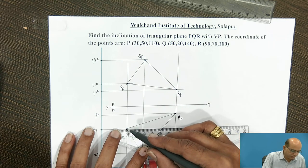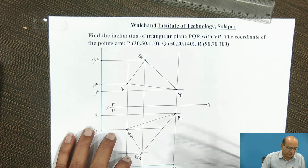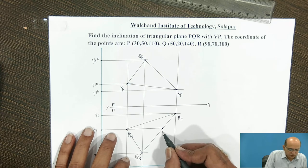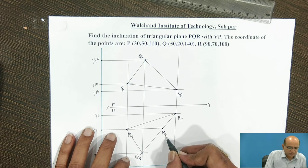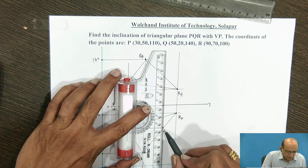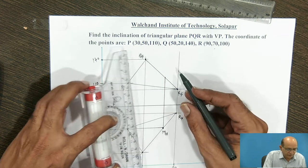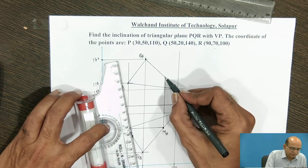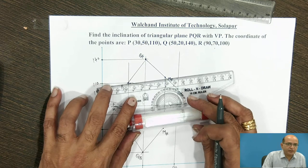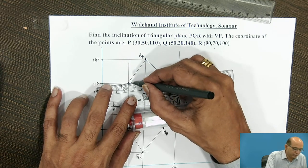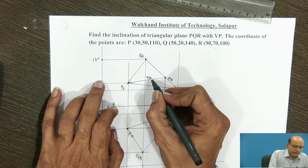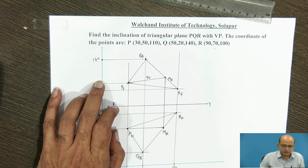We draw a line parallel from point P, which intersects at a point called MH. We then project this MH point into the front view to obtain the true length of that line. This point is called MF. When we connect PF to MF, that gives us the true length of line PM.